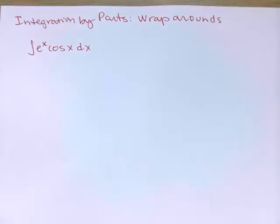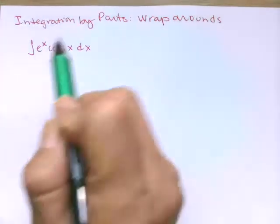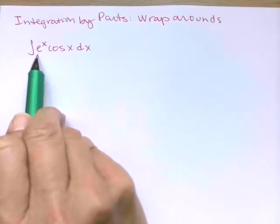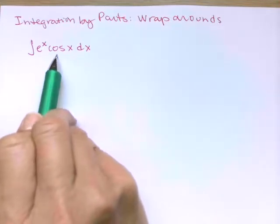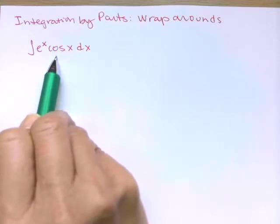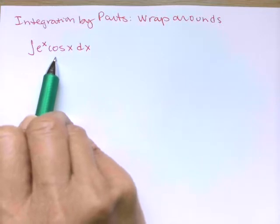This version of integration by parts might be the most challenging. I call it a wraparound, and we need to use this wraparound idea when both factors in your integrand are transcendental, meaning neither of them is a polynomial that becomes nice or gets down to be a constant.